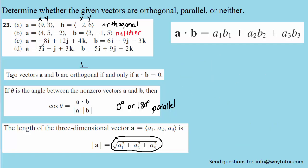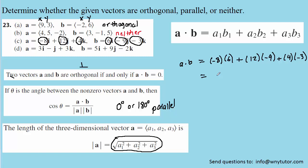Moving to part c, the vectors are written in unit vector form, but we still have their components. For vector a, the x component is negative 8, the y component is 12, and the z component is 4. The same idea applies to vector b for its x, y, and z components. We'll find the dot product first, multiplying corresponding components and summing them. In this case, the result is certainly not 0, so the vectors in part c are not orthogonal. We'll move on to the second equation to determine the angle between the vectors.